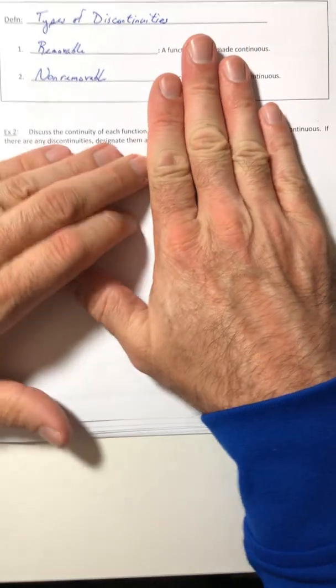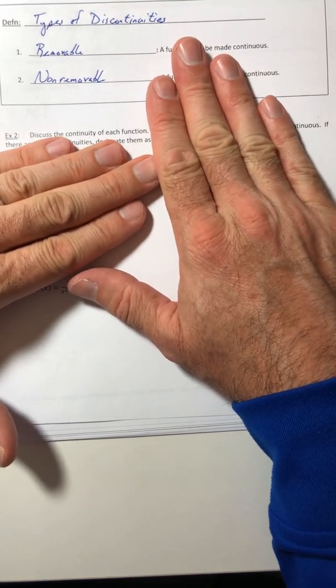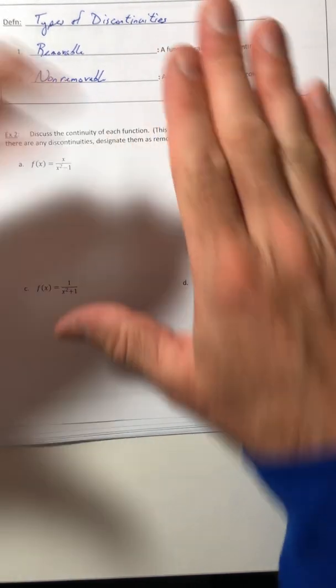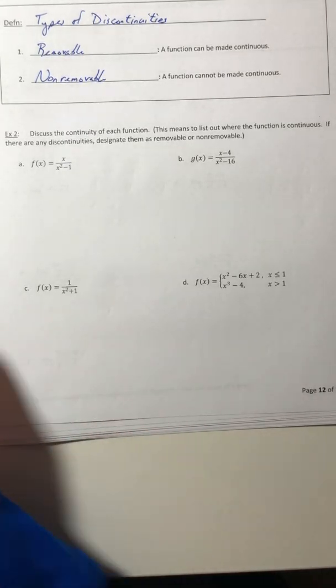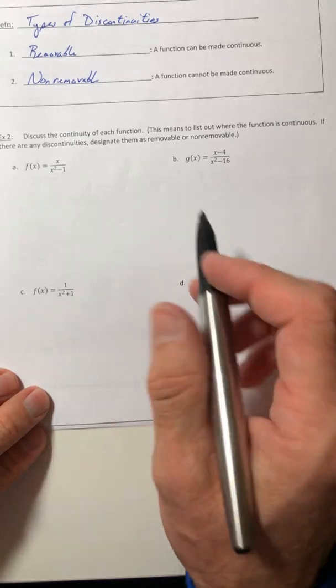You might have just that as your instructions. Discuss the continuity of each function. That means you have to do everything that was in the parentheses, whether it was stated or not. You got to discuss everything about it.